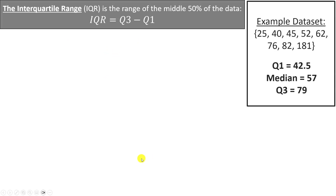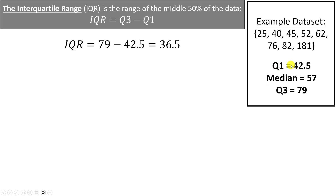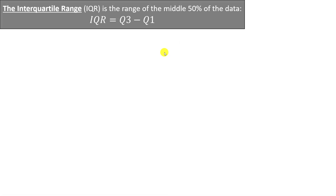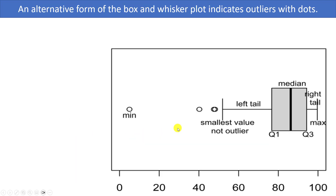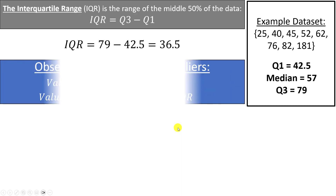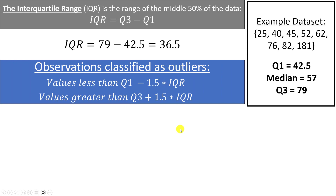Using the car salesman data set with Q1 = 42.5 and Q3 = 79, the IQR is Q3 minus Q1: 79 minus 42.5 equals 36.5. This means the middle half of the data set has a range of 36.5 units — which corresponds to the distance from the beginning to the end of the box in the box plot.